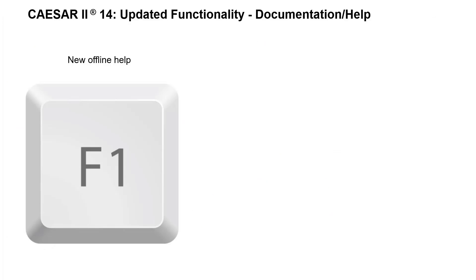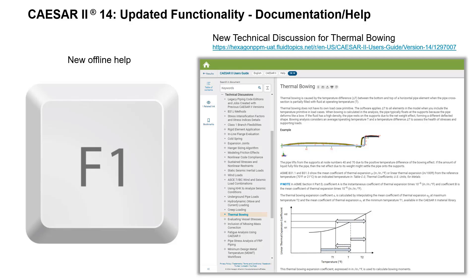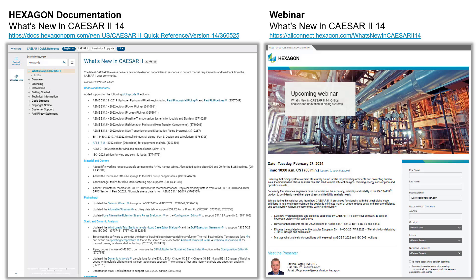CAESAR 2.14 added a new offline help that will open in your default web browser for installations that do not have internet access to the online help. There is also a new technical discussion for thermal bowing. For more information on what's new in CAESAR 2.14, please review the Hexagon online documentation and register to watch the webinar. Thank you.